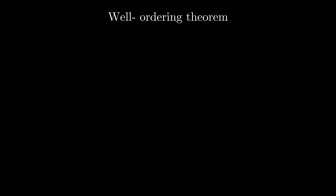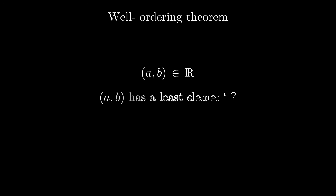Another counter-intuitive fact arising from the axiom of choice is called the well-ordering theorem. It states that any set can be well-ordered. And for the reals, it means that there is a way to define what less than and greater than mean, so that any open set from A to B has the smallest element. And this contradicts our perception of the reals, because we know that there is no smallest element in there.